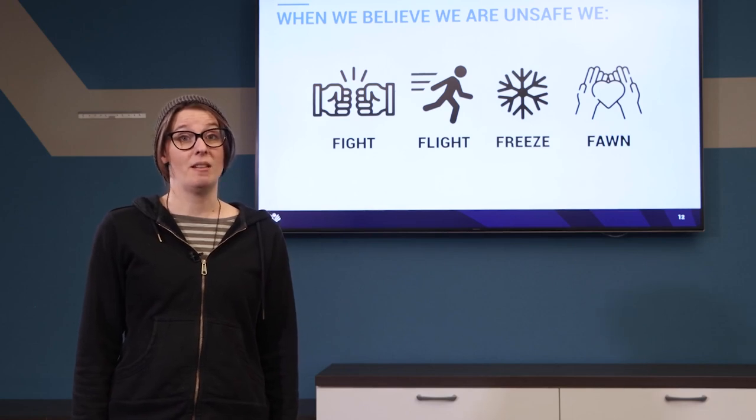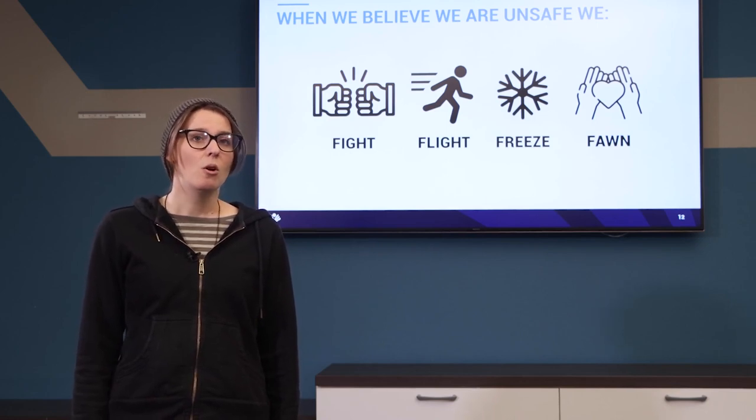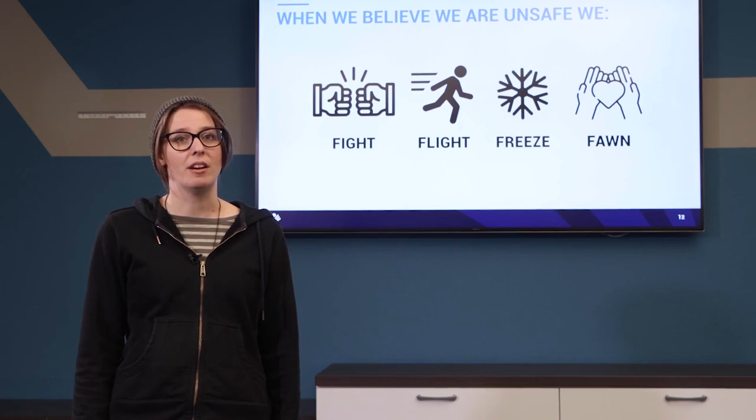We all experience these sometimes. So do our students. A student may feel unsafe and engage in a fight behavior by raising their voice at you, or a flight behavior by running away from you on the playground or leaving the classroom, or a freeze behavior by not responding when you call their name, or a fawn behavior by going out of their way to please you in hopes of getting your approval. Behaviors are communication. When a student engages in fight, flight, freeze, or fawn behaviors, they are trying to tell us: I feel unsafe. When a student engages in those behaviors often, they are trying to tell us: I feel unsafe all the time. That is the autistic experience. Our autistic students are trying to tell us: I always feel unsafe. Please help me feel safe.